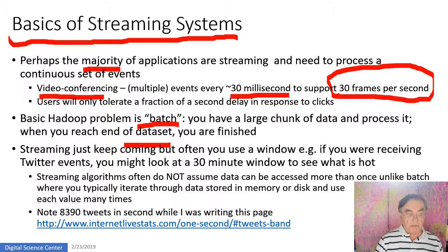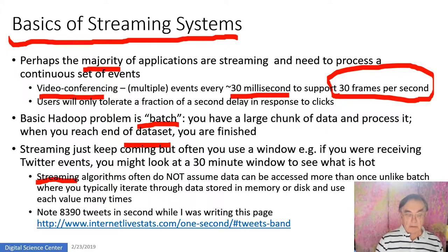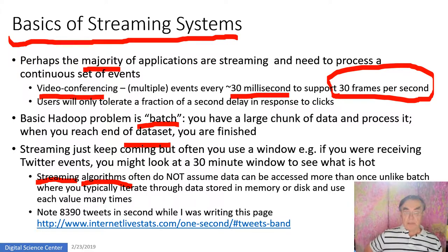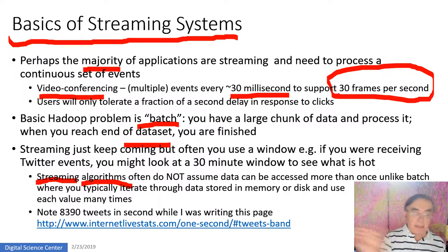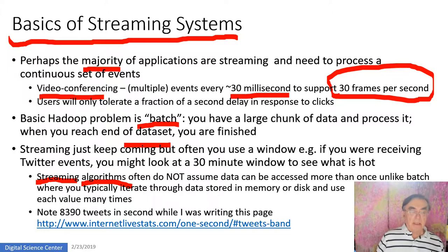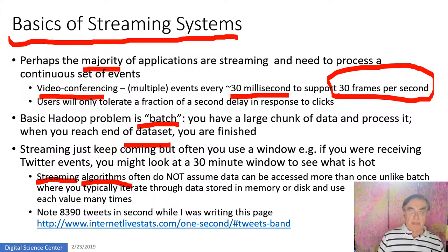Another key feature of streaming data is that you don't necessarily keep the data. Sometimes you do — like with Twitter, you secretly save the tweets as well as processing them in real time. However, there is a whole set of algorithms called online algorithms or streaming algorithms, which assume they only see each data point once and have to extract the maximum from it, because they can't go back to the data as classic deep learning does.